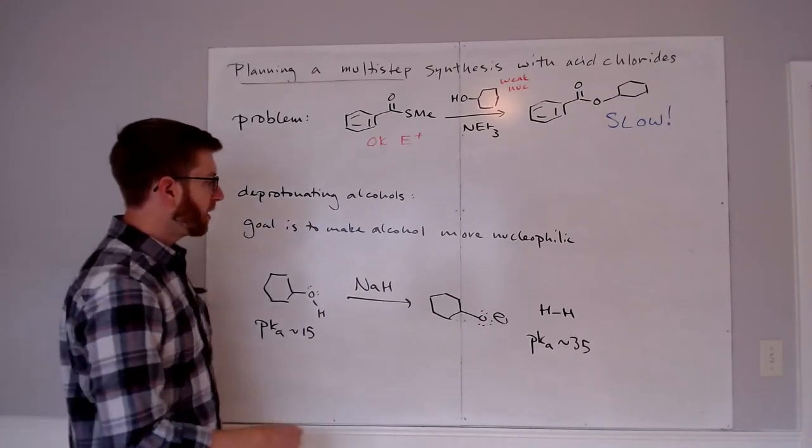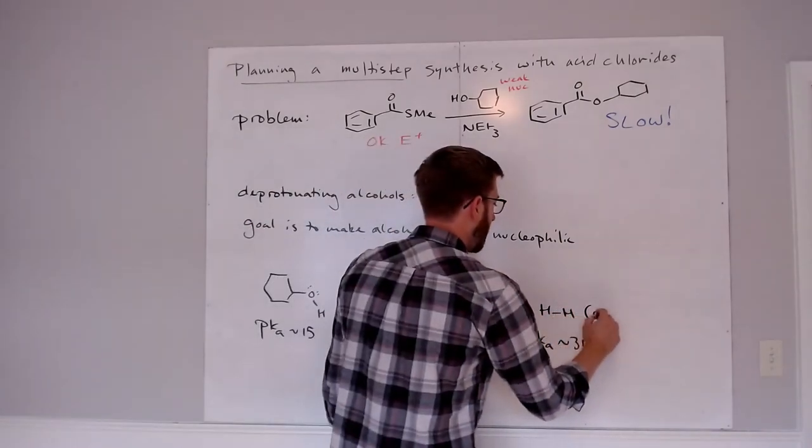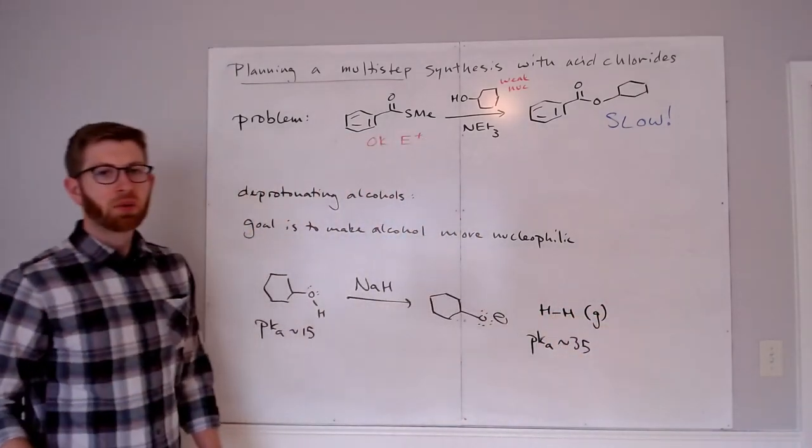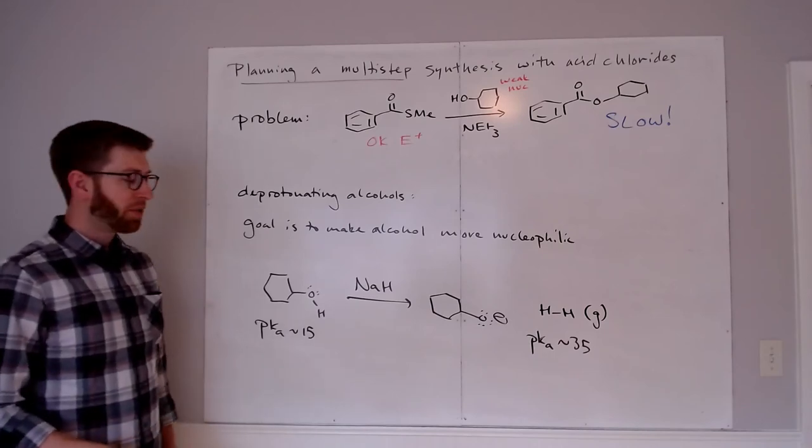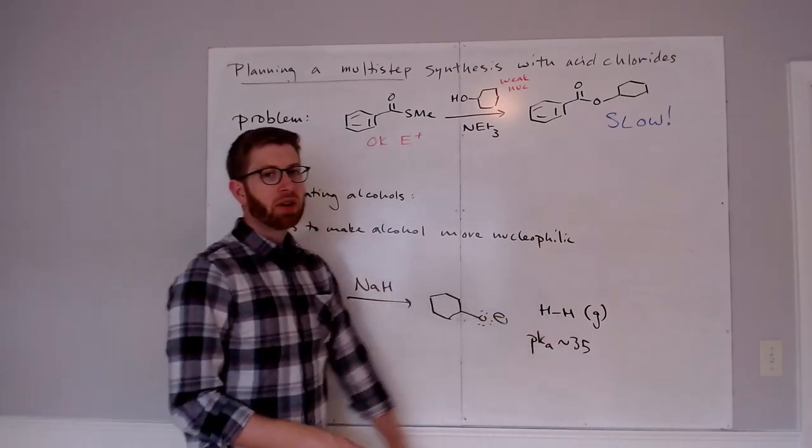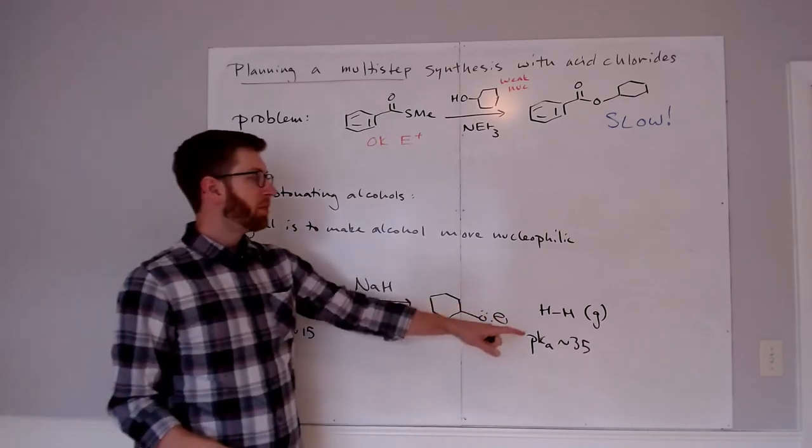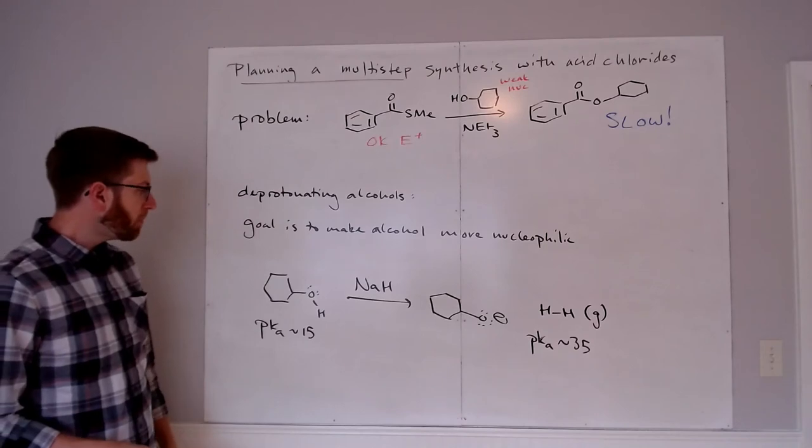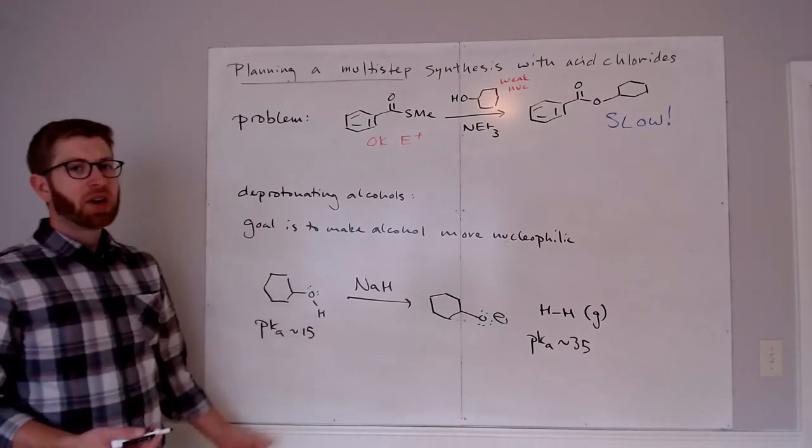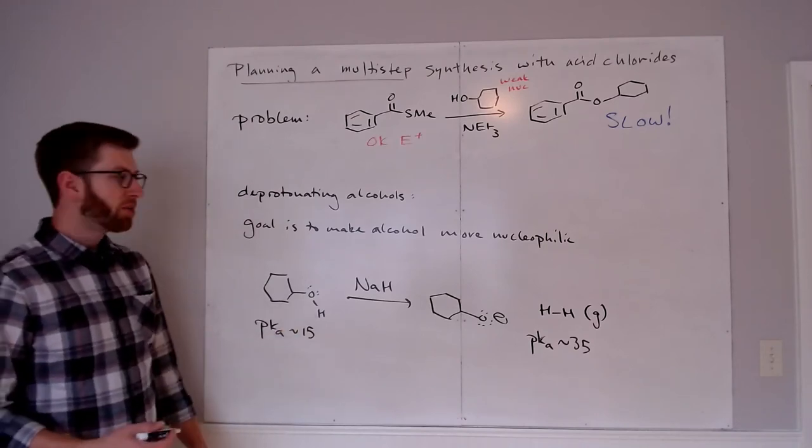This looks perfect. We've got this big difference in pKas. That means the equilibrium constant for this acid-base chemistry should be about 10 to the 20th. And the other thing is that H2 is a gas. So just like we saw with SOCl2, or the synthesis of acid chlorides, for instance, we're actually driving this equilibrium all the way to the right because we're removing product. H2 is leaving the vessel as we go.